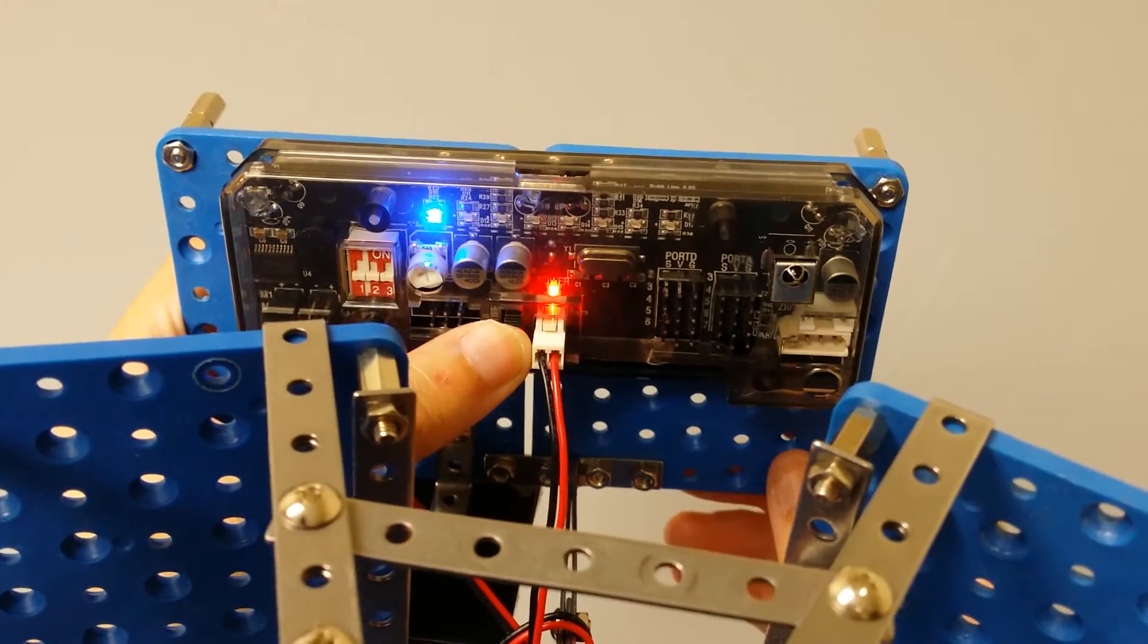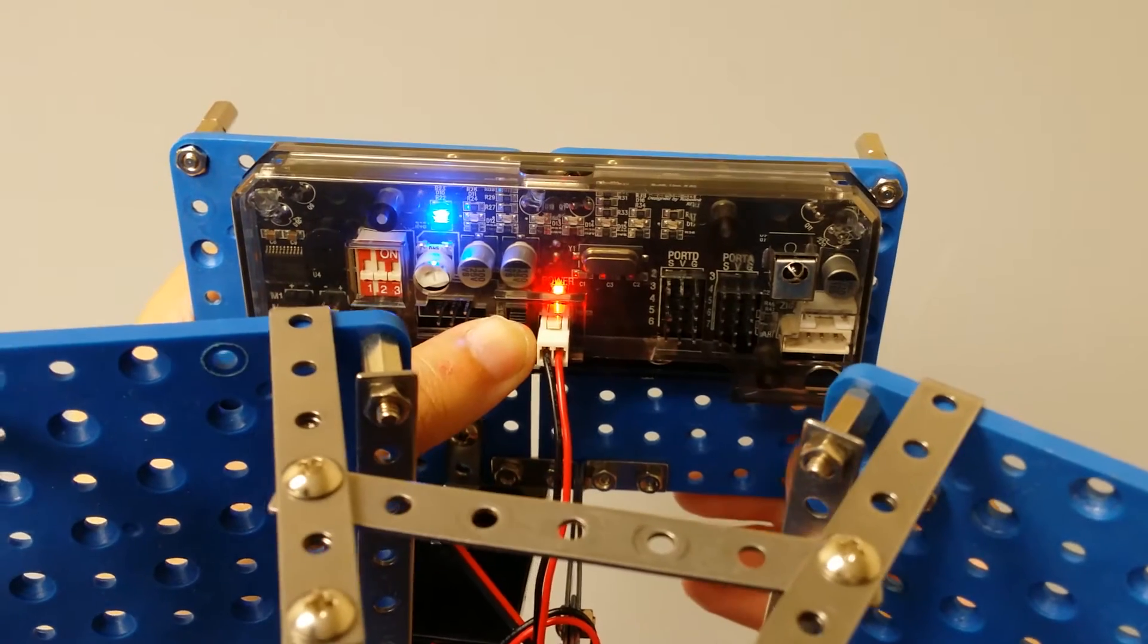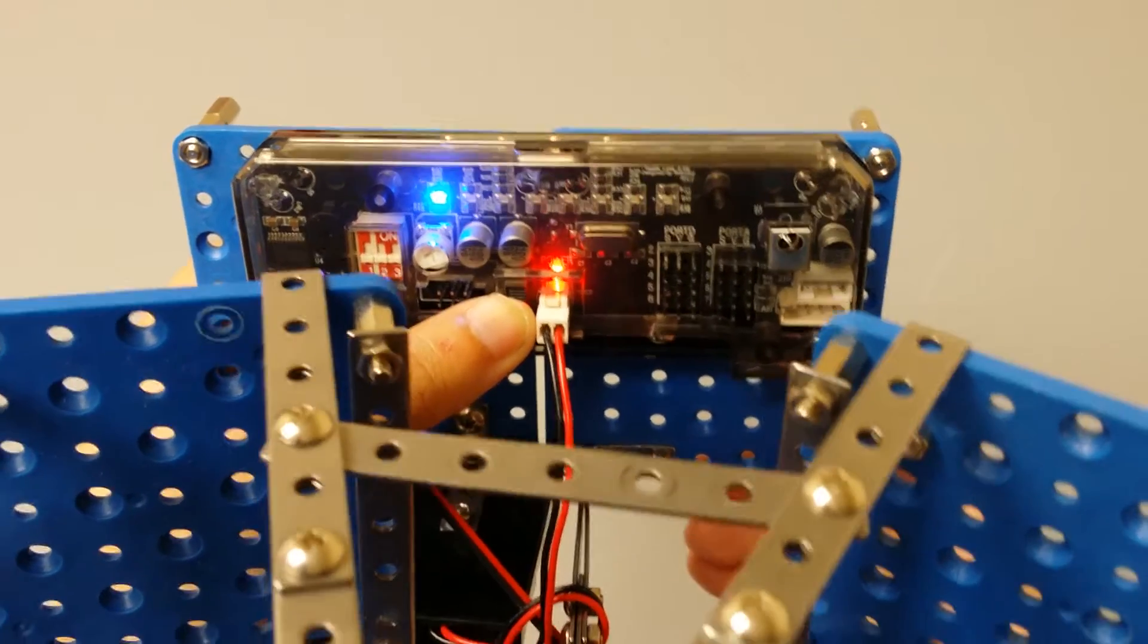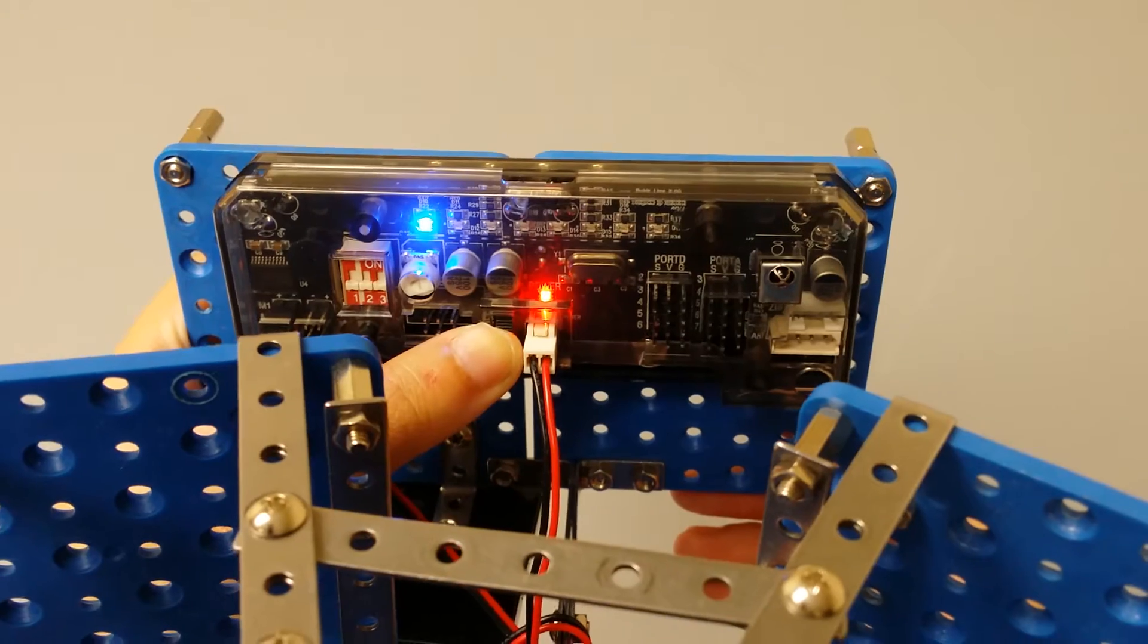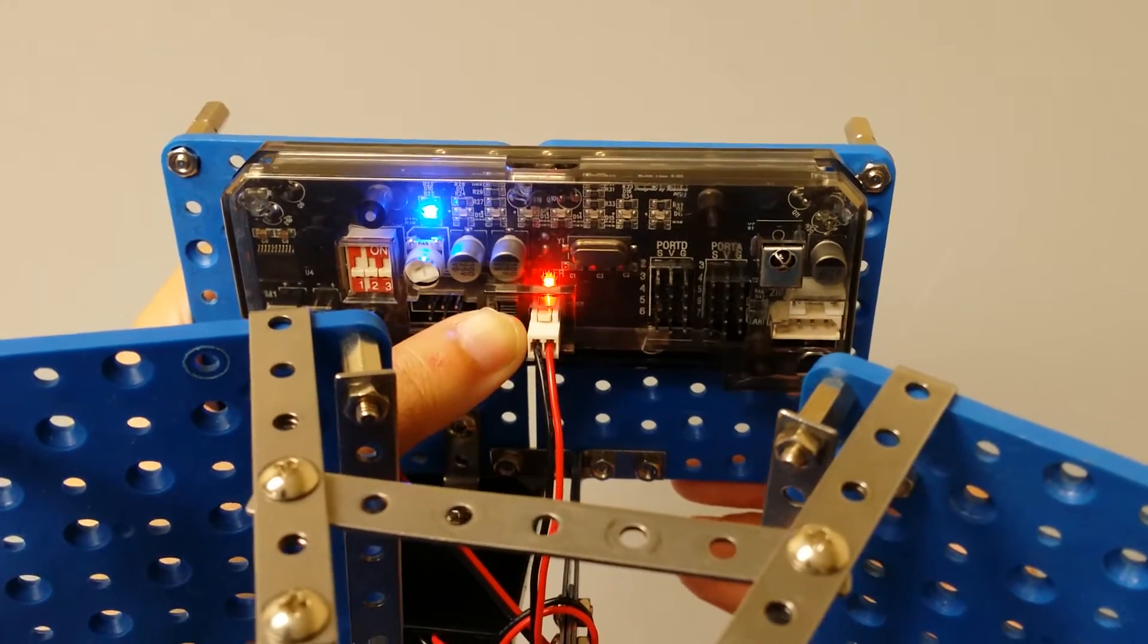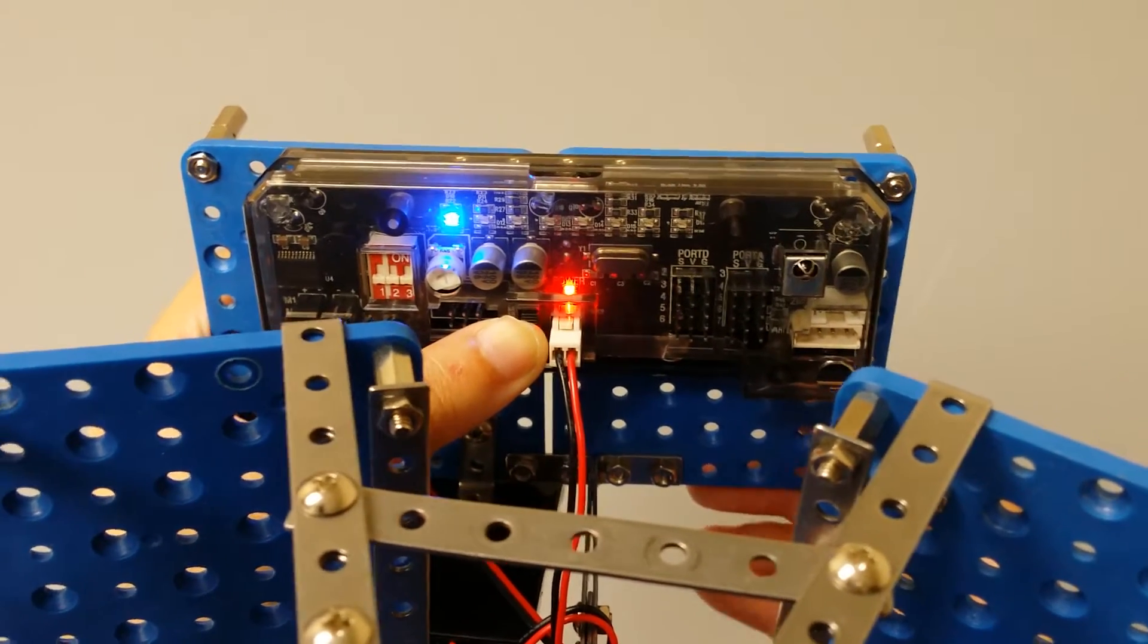Then you need to select program 7, which is the program that this robot is pre-programmed to. To select program 7, you need to touch the right IR sensor until the 7th LED light is turned on.